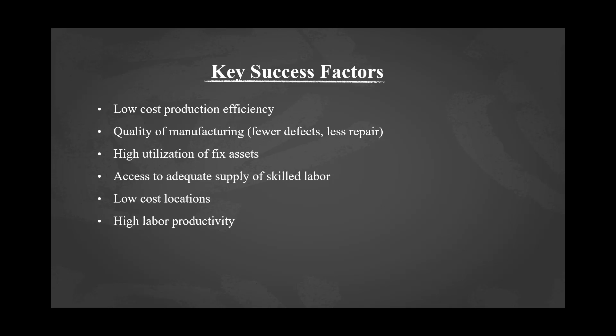For example, there are two employees both working in an automated industry in the seating department. Employee number one can make one seat in an hour, and employee number two can make five seats in an hour. This means the productivity level of labor two is higher than the productivity level of labor one.